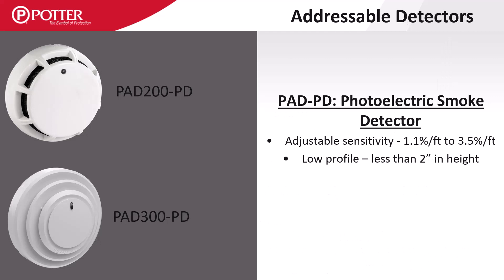The PAD PD is POTR's photoelectric smoke detector. These detectors can have their sensitivity adjusted via the programming software. All models that include photo smoke detection are UL 268 7th edition compliant.